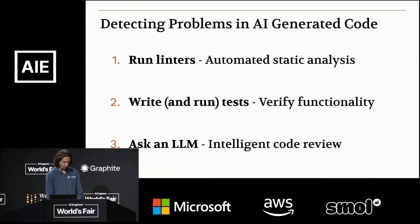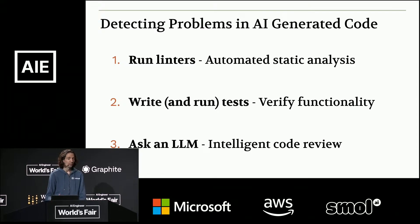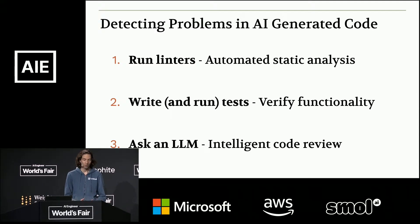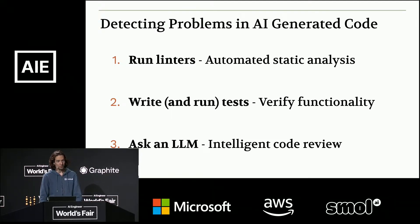But no matter how many things you do to prevent the AI system from making mistakes in the first place, it's going to make some mistakes. There are many things we can do to detect those problems and prevent them from getting into production. We'll go through three: running linters, writing and running tests, and asking an LLM.